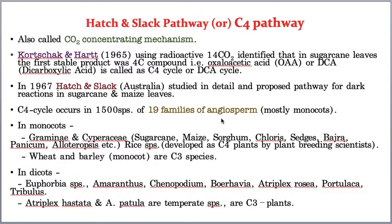Even within the same genus, some species choose C3 and some choose C4, likely due to different types of adaptations. Just as all humans belong to the same species but have different preferences, plants of the same genus can opt for different photosynthetic pathways.